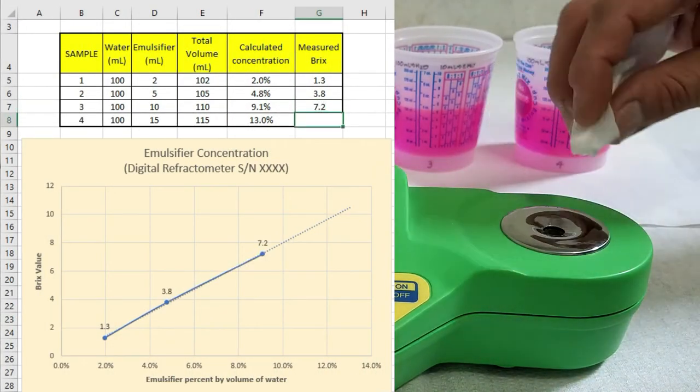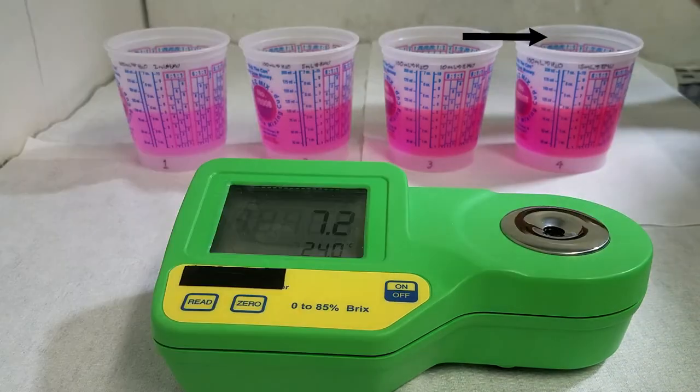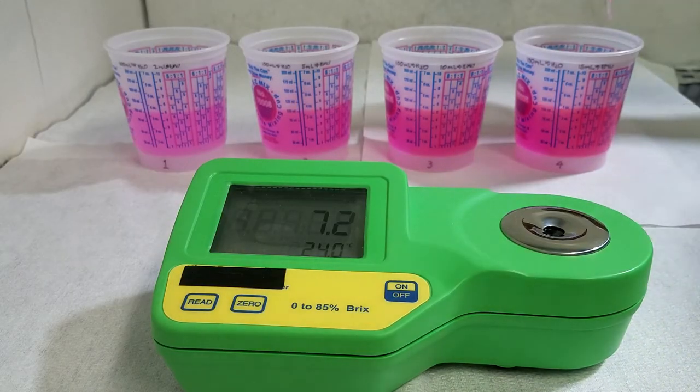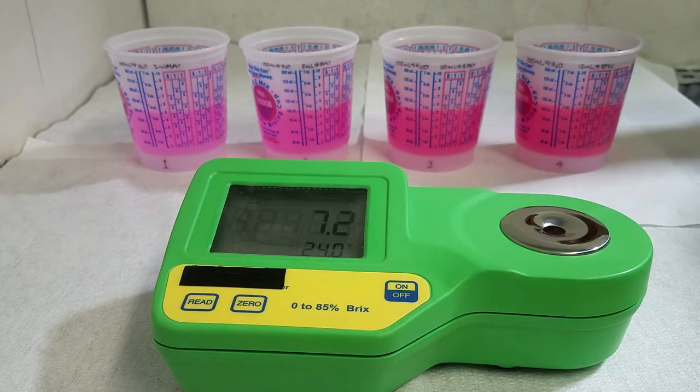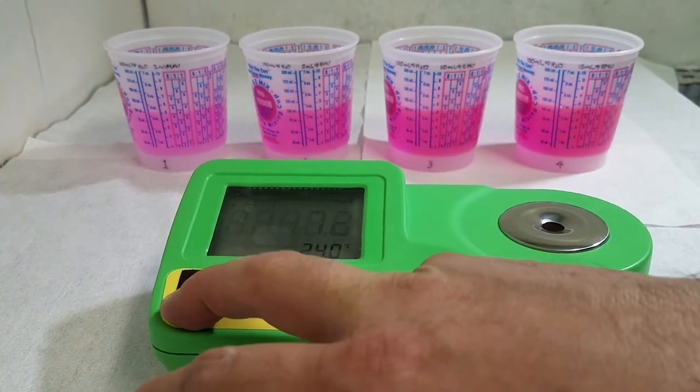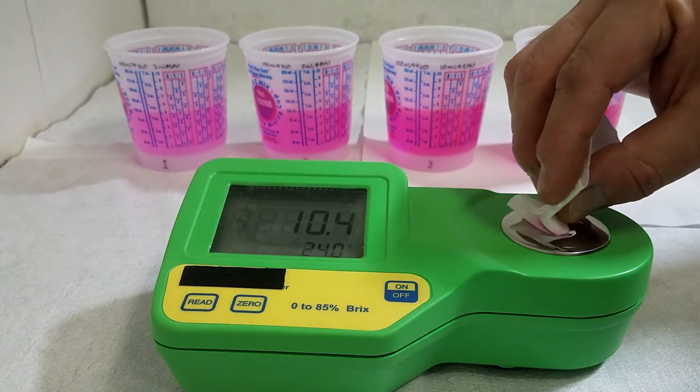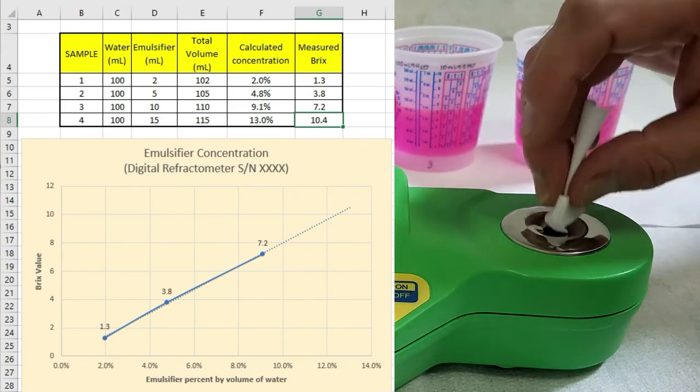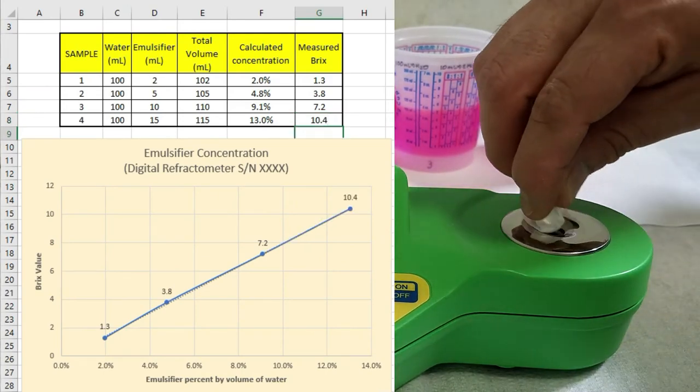Feeding this value into the Excel, we are going to get the third point chart. Taking the last sample, sample number four, we are going to get the value of 10.4. Feeding this value into the Excel, we are going to finish the chart.